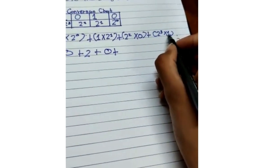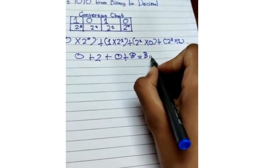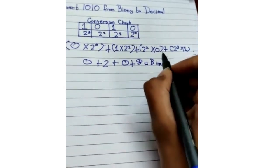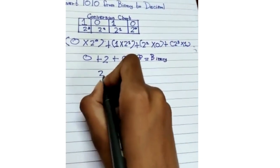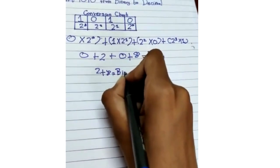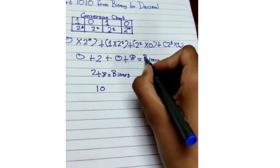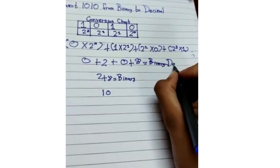...is eight, eight times one is eight. So here it's equal to the binary. So now two plus eight is equal to the binary which is 10. Oh sorry, I forgot to do here, it's decimal.